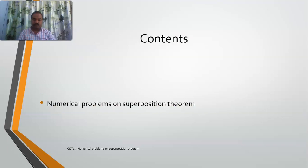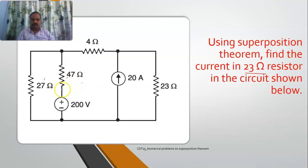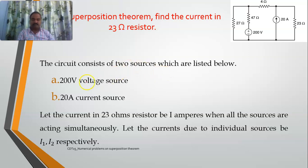Using superposition theory, find the current in the 23 ohm resistor in the circuit. This circuit consists of four resistors and there are three loops. First of all, let's see how many sources are there. There is one voltage source of 200 volts and one current source of 20 amperes. So the circuit has two sources, and we need to determine the current in the 23 ohm resistor, which I will take as i.